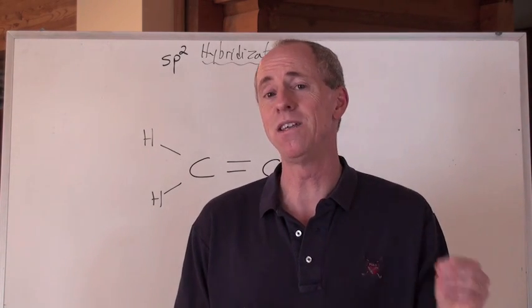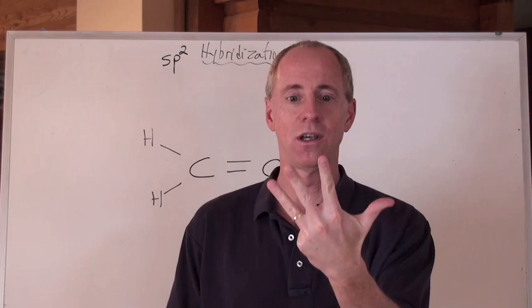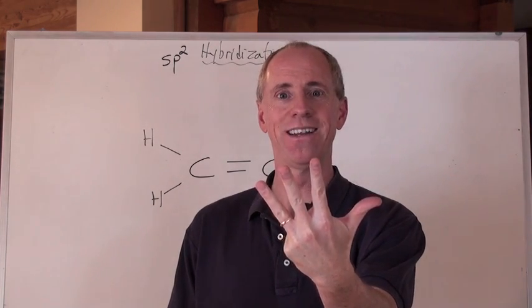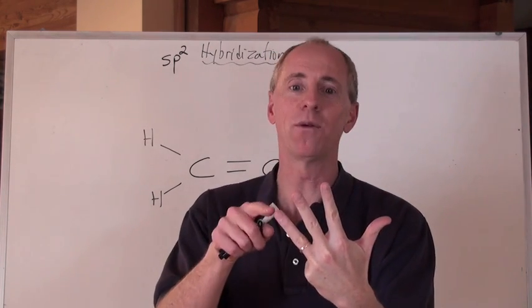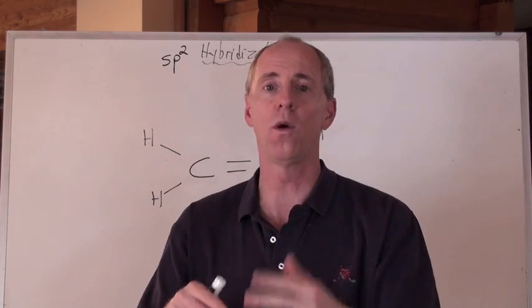Previous hybridization, sp³, because there's four effective pairs. By the way, s and three p's, that's four effective pairs, right? So that's what you get when you get four effective pairs, sp³ hybridization. Just count up the number of orbitals, there's four.